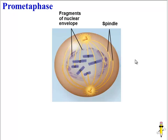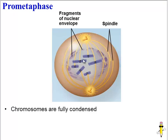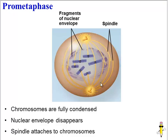Prometaphase follows closely after prophase. Here we can see that the chromosomes are now fully condensed into their rod-shaped form. We can also see that the nuclear envelope surrounding the nucleus is disappearing. And finally, the spindle is attaching to the centromeres, the center of the sister chromatids.